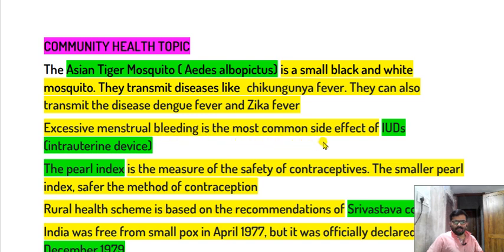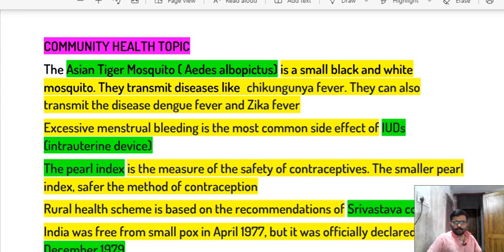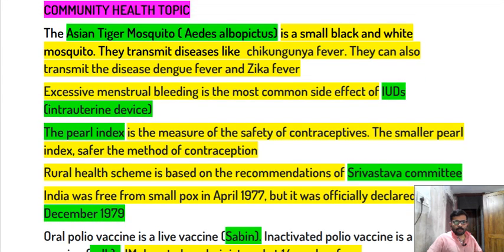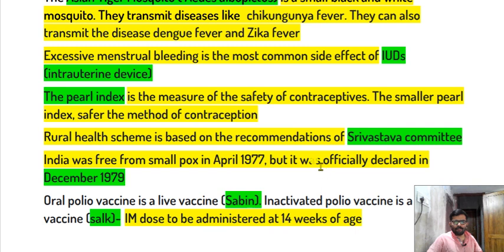Excessive menstrual bleeding is the most common side effect of an IUD. The Pearl Index is a measure of the safety of contraceptives. A smaller Pearl Index indicates a safer method of contraception.